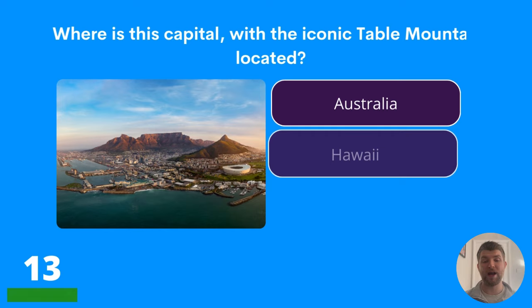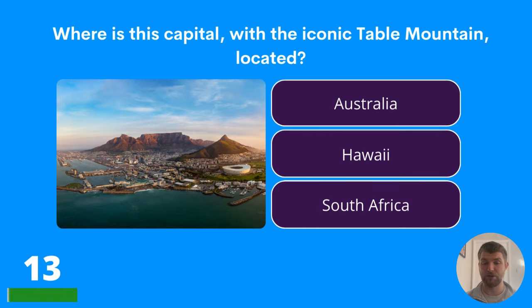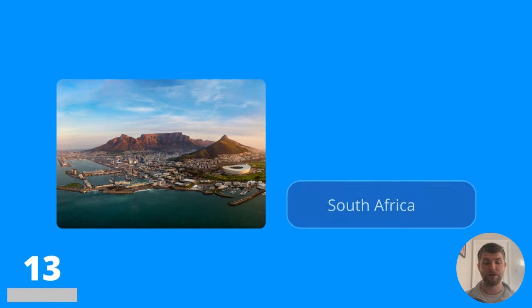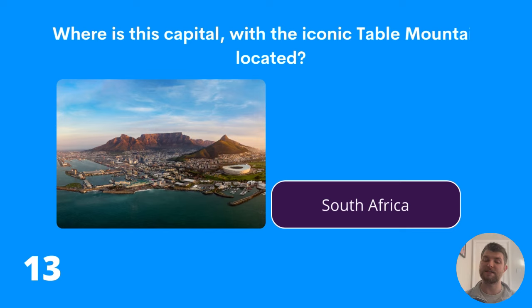Question thirteen: where is the capital with the iconic Table Mountain located? Australia, Hawaii, or South Africa? You've got a picture of the capital there — where is this capital? The answer is South Africa.